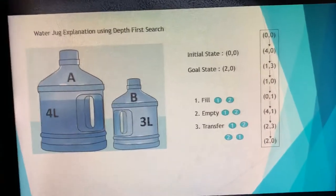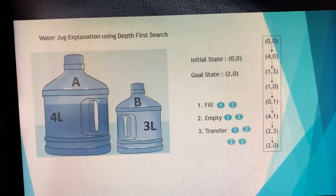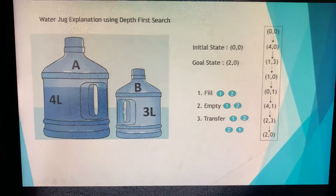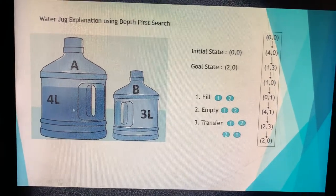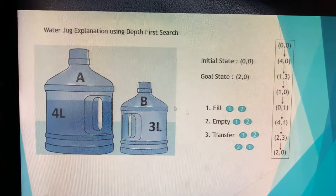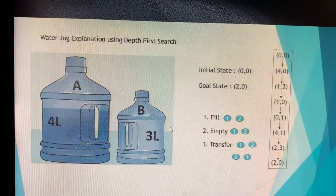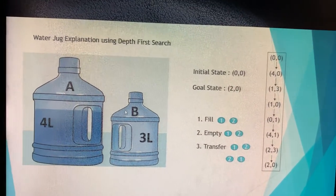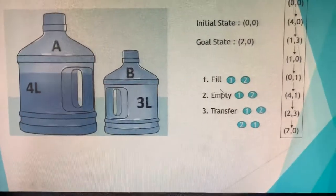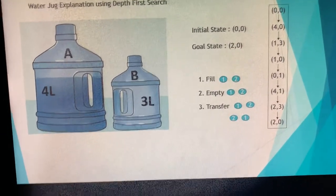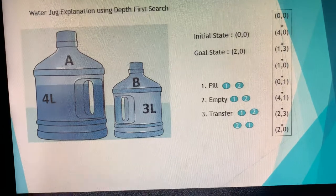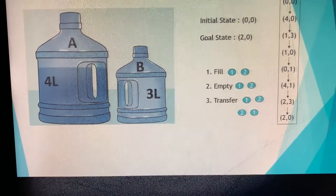Here is the solution I'll be teaching you. A represents the four-liter jug and B represents the three-liter jug. The initial state starts from (0, 0) where both jugs are empty. The goal state is jug A contains two liters and jug B contains zero liters. There are three operations to focus on: fill jug A or fill jug B; empty jug A or empty jug B; and transfer jug A to jug B or jug B to jug A.